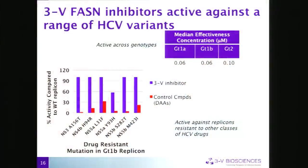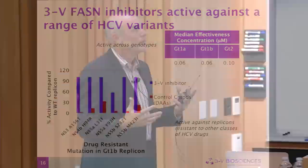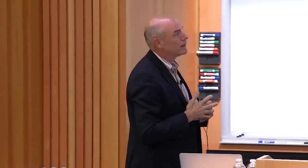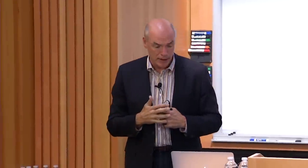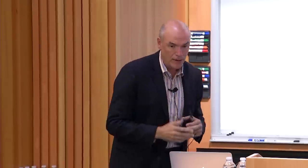One hallmark of a broad-spectrum antiviral is treating drug-resistant virus. Working in hep C, we asked: do we hit other genotypes? We tested genotype 1A, 1B, and 2A replicons and hit all with about the same potency. Then we made replicons with mutations conferring resistance to each classic direct-acting antiviral — telaprevir, nucleoside inhibitors, NS4B and 5A inhibitors. Our drug shows nearly 100% activity regardless of the mutation. The one exception is NS5A Y93H, where we get about 60% activity — something we're still investigating. Control compounds correctly showed loss of activity against resistant replicons.